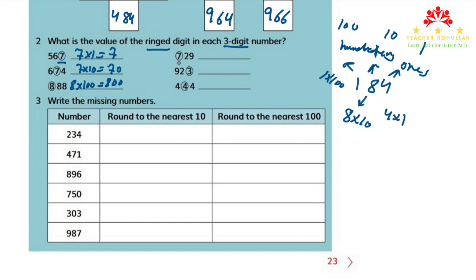Coming to the next column, we have 7 in the hundreds place and it's ringed, so the value is 700, or 7 times 100 equals 700. The value of 3 in the ones place is 3, or 3 times 1 equals 3. And the last ringed digit is 4 in the tens place, so 4 times 10 equals 40.